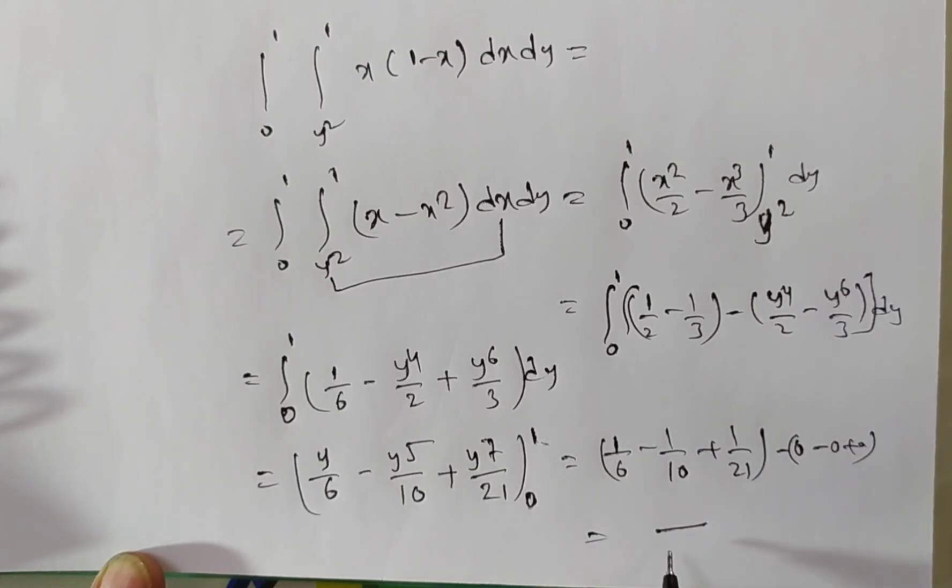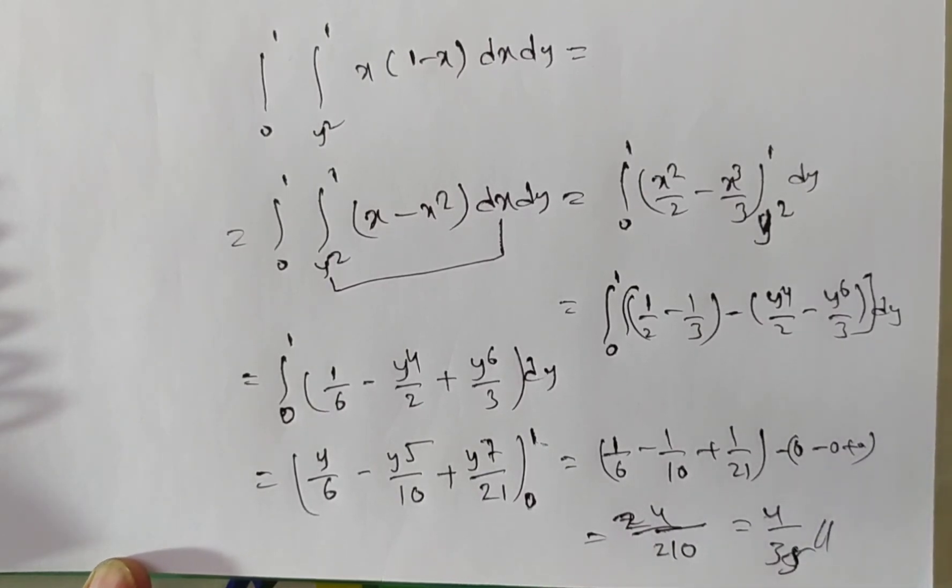then lcm for this is, you will have a 210, and if you are simplifying this, then you will have a 30, on simplifying, you will have 24, 24 by 210 is nothing but 4 by 35 is the answer.